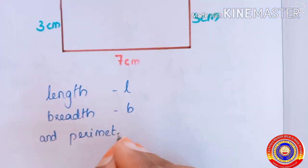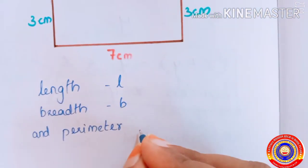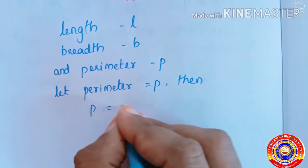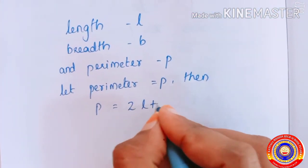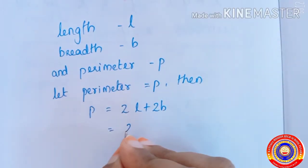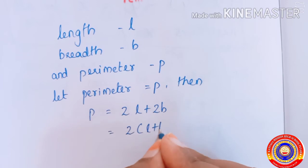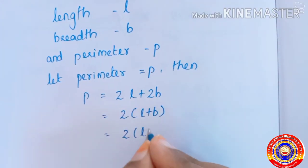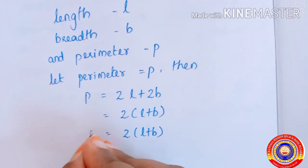...and perimeter as P, P is equal to 2L plus 2B. We can take the two as common, then two into L plus B. That is, perimeter P is equal to 2 into (L plus B).